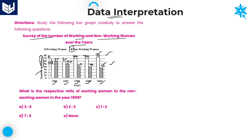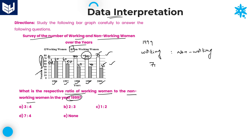Now, according to that, we need to solve the questions. Look at the first question: what is the respective ratio of working women to non-working women in the year 1999? In 1999, working women are 70 millions whereas non-working women are 40 millions. Therefore, the required ratio — you can cancel two zeros — you will get the ratio as 7 is to 4.